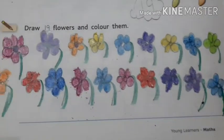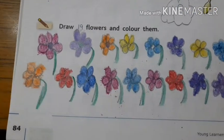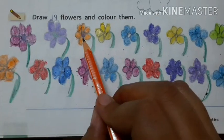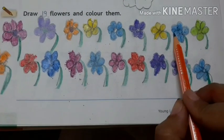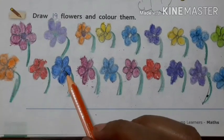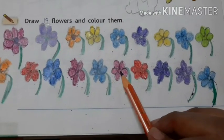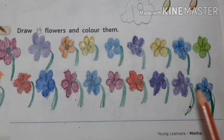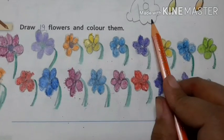Let's count with me how many flowers we drawn and colored here. 1, 2, 3, 4, 5, 6, 7, 8, 9, 10, 11, 12, 13, 14, 15, 16, 17, 18, 19. So we drawn here 19 flowers.